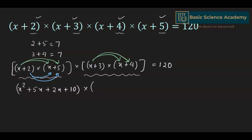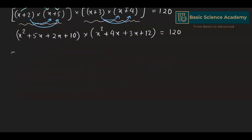Multiplying (x+3) and (x+4): x times x is x squared, x times 4 is 4x, 3 times x is 3x, and 3 times 4 is 12. So (x+3)(x+4) = x² + 7x + 12. This gives us (x² + 7x + 10)(x² + 7x + 12) = 120.